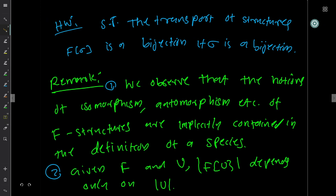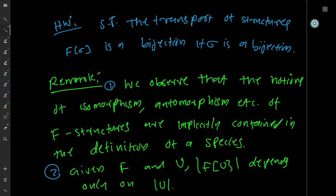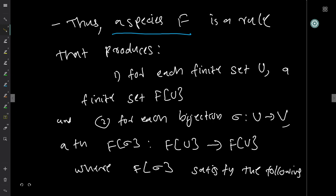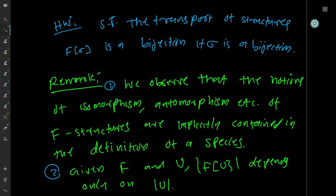As homework, show that the transport of structures is a bijection if σ is a bijection — for every bijection, the transport is also a bijection. It is intuitively clear and shouldn't be difficult to prove. One can observe that the notions of isomorphism and automorphism of F-structures are implicitly contained in the definition of species, coming for free from the way we've defined these bijections.